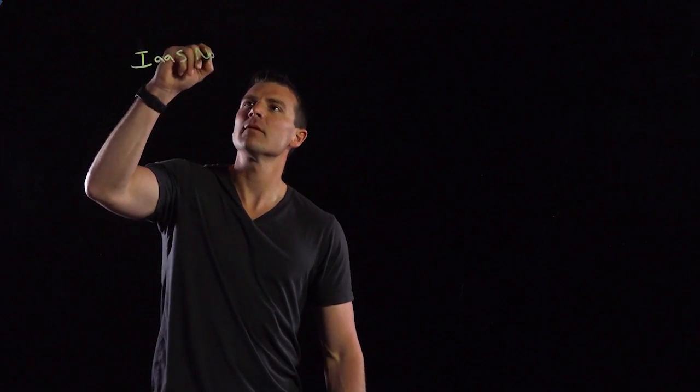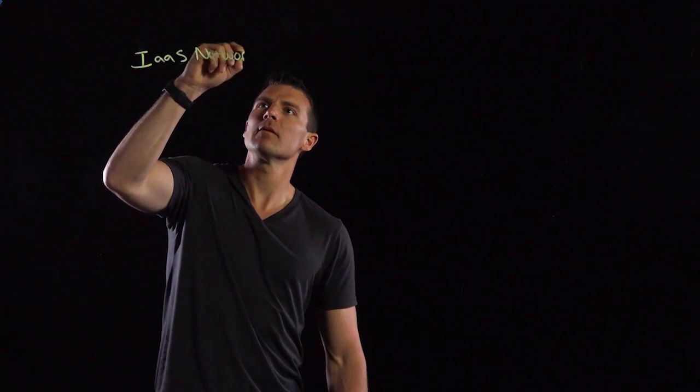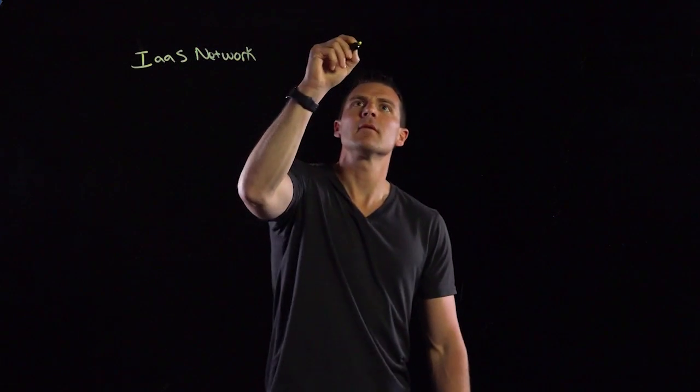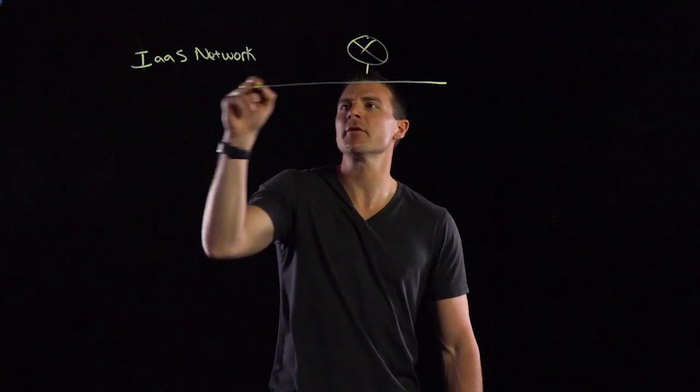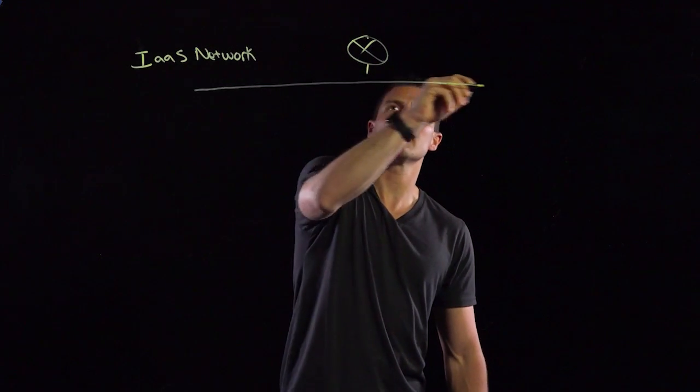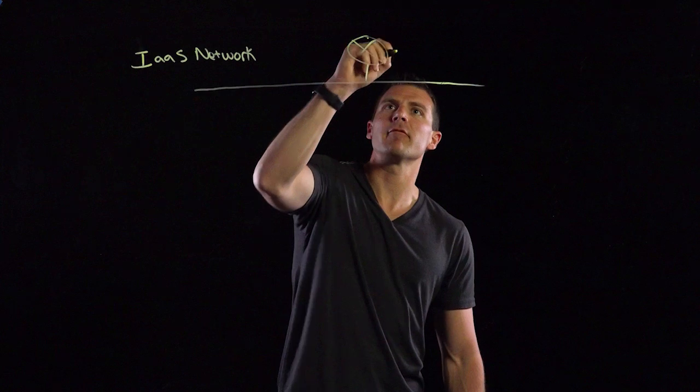First thing we're going to draw is the IaaS network. We're just going to draw a simple topology here with a physical router and a switch or a VLAN hanging off of it.